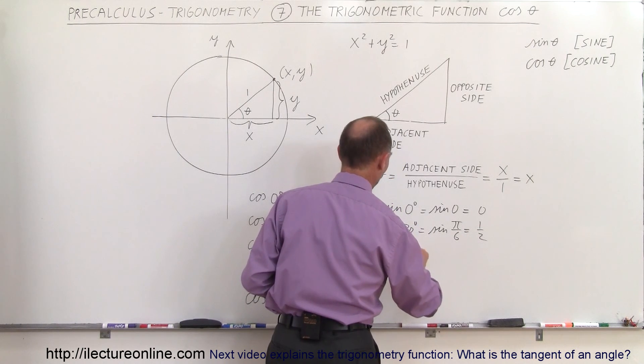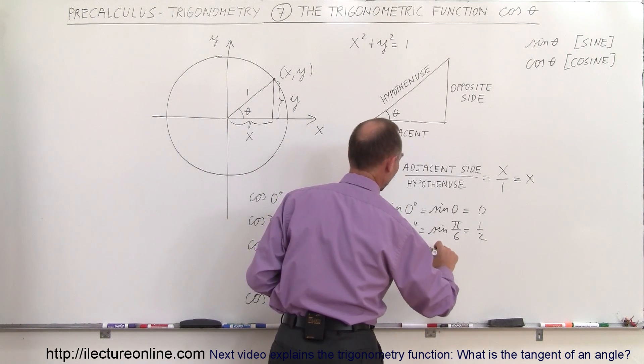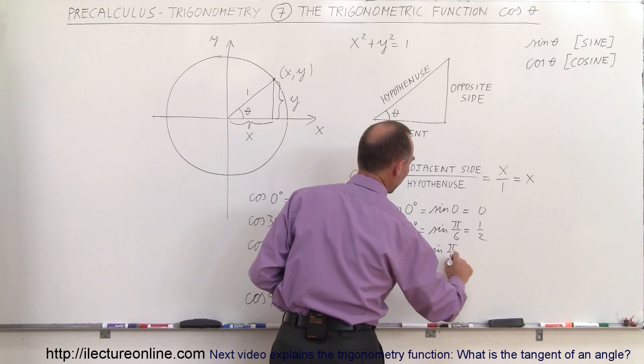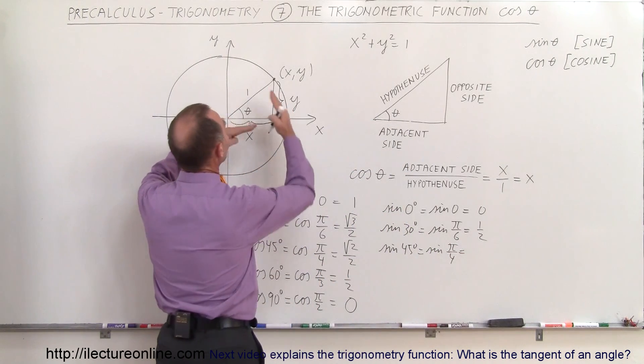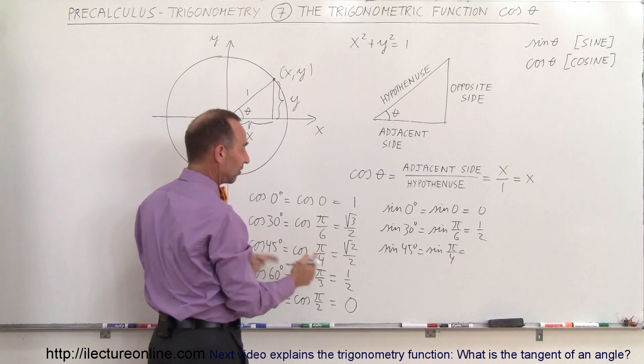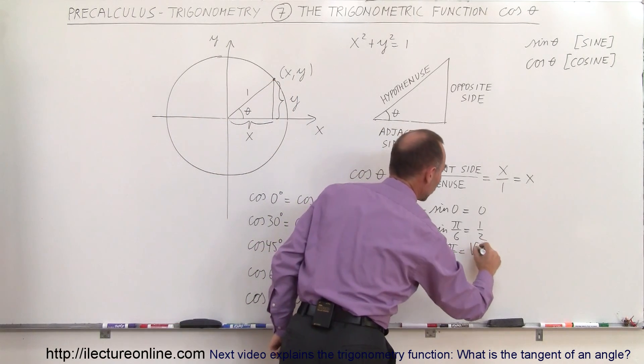The sine of 45 degrees is equal to the sine of π over 4, which is equal to—and notice that at 45 degrees, the x-value and the y-value are exactly the same, and so it's the square root of 2 over 2.